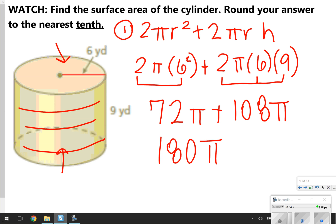This would be our answer in terms of pi, but it says to round your answer to the nearest tenth. So what I'm going to do is this essentially means 180 times 3.14. We should get 565.2 yards squared.